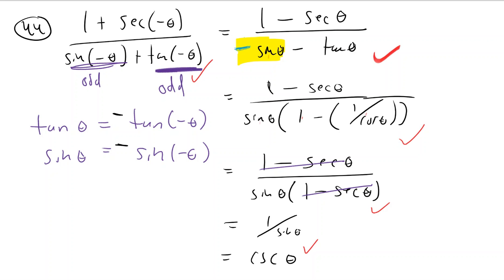Is tan of negative theta equal to negative tan of negative theta, or just negative tan of theta? Negative tan theta. When you're talking about even and odd, you're comparing a positive angle to a negative angle. They're either equal or you multiply one of them by negative, but the angles need to be different.